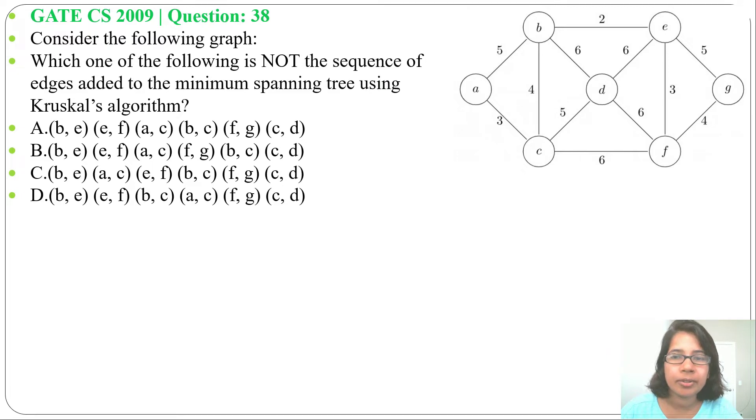Hi, let's solve one previous question of greedy technique. This question was asked in GATE CS 2009, question number 38. Consider the following graph: which one of the following is not the sequence of edges added to the minimum spanning tree using Kruskal's algorithm? Four options are given.